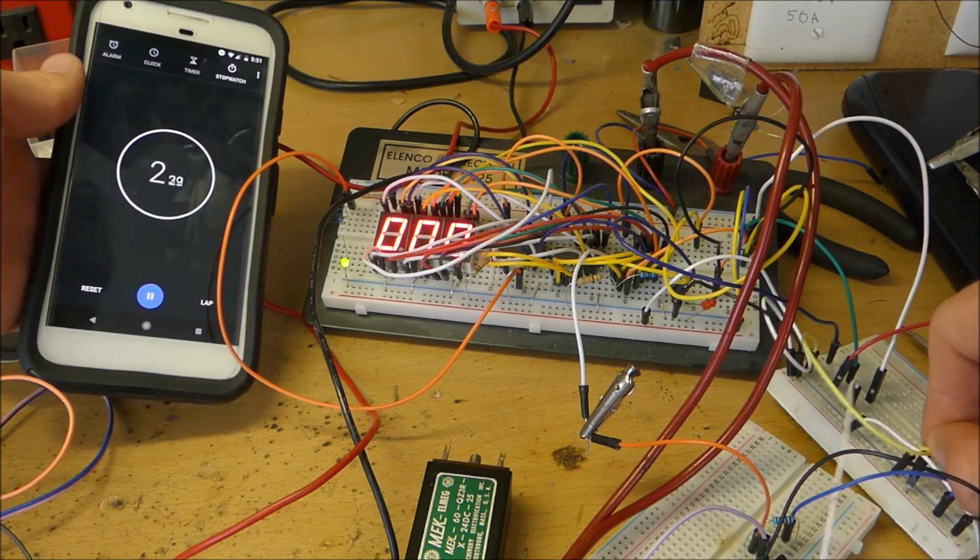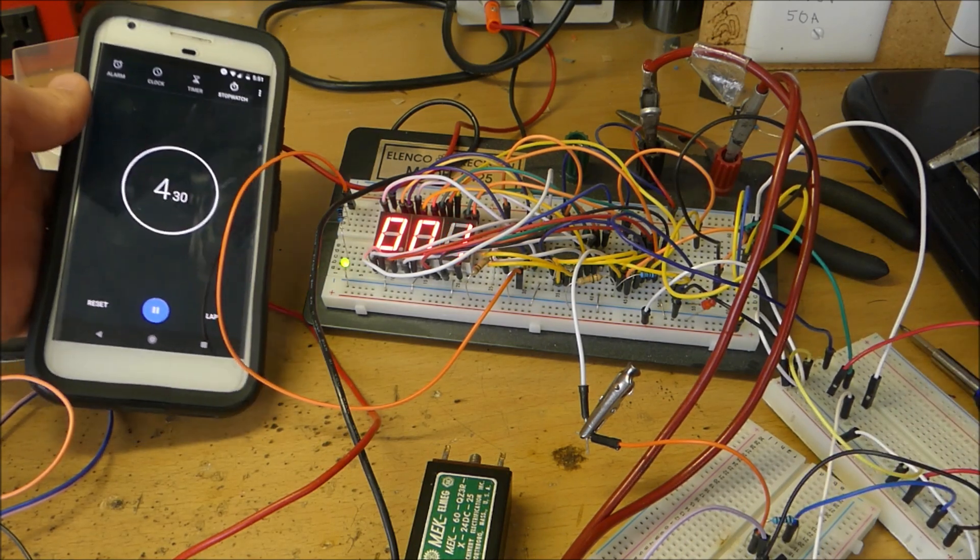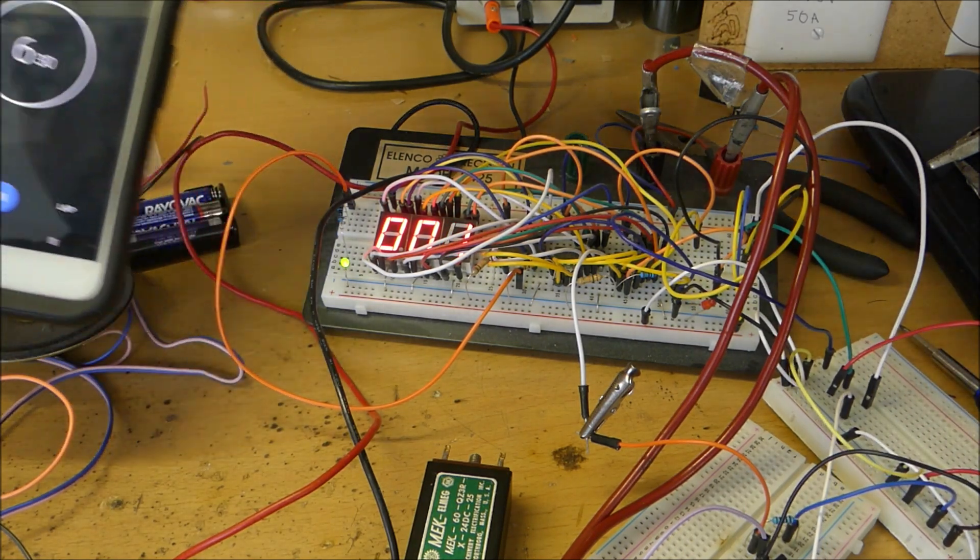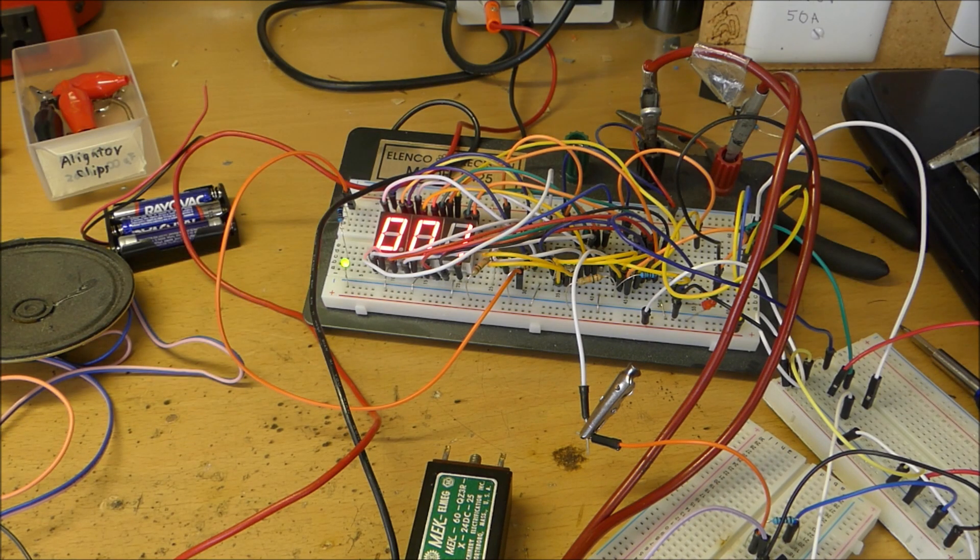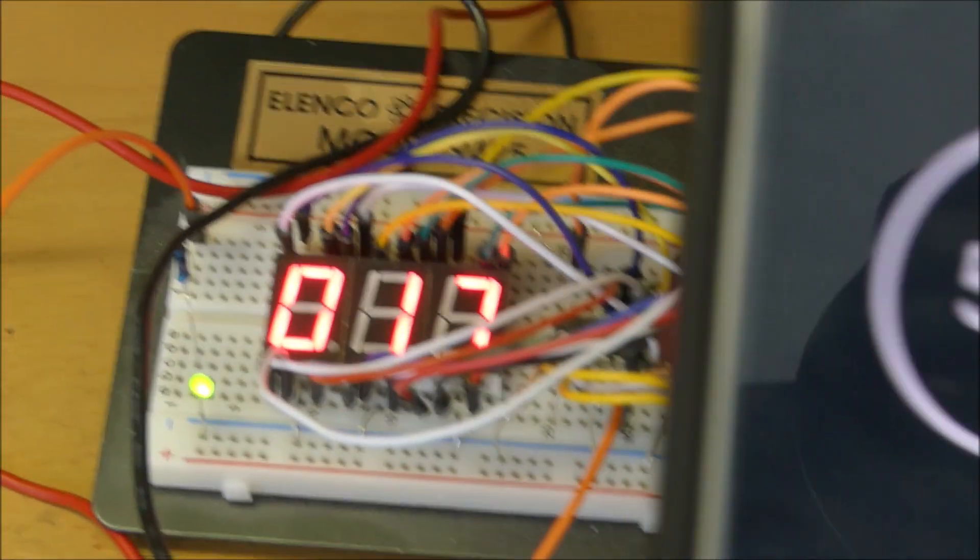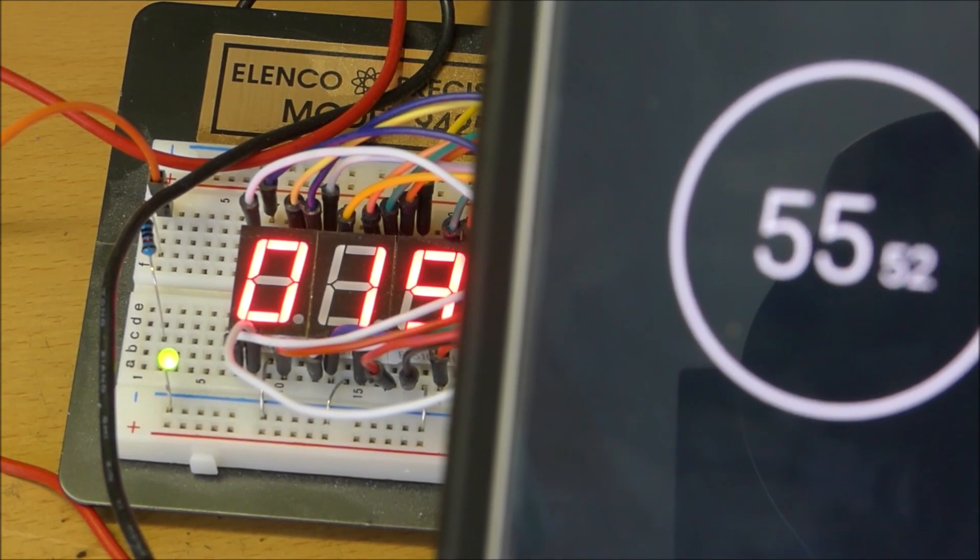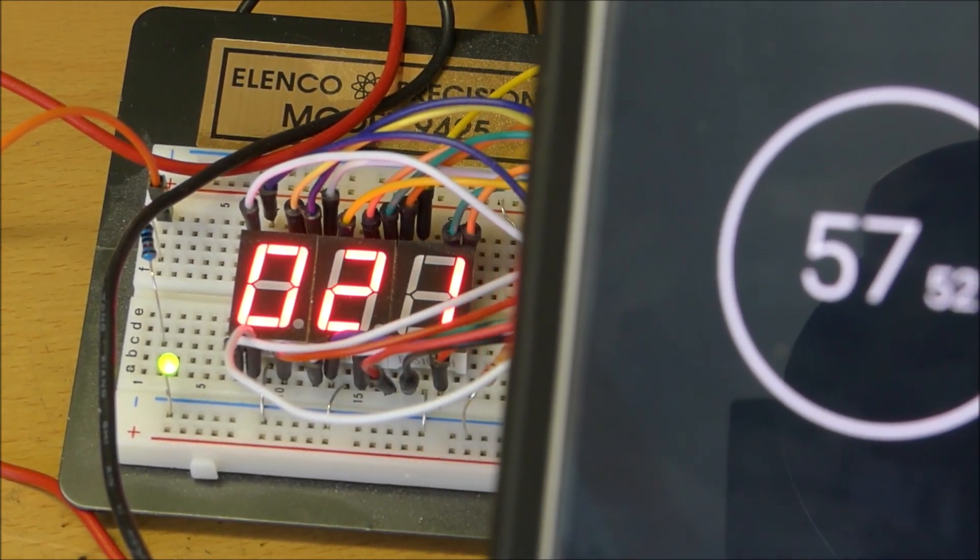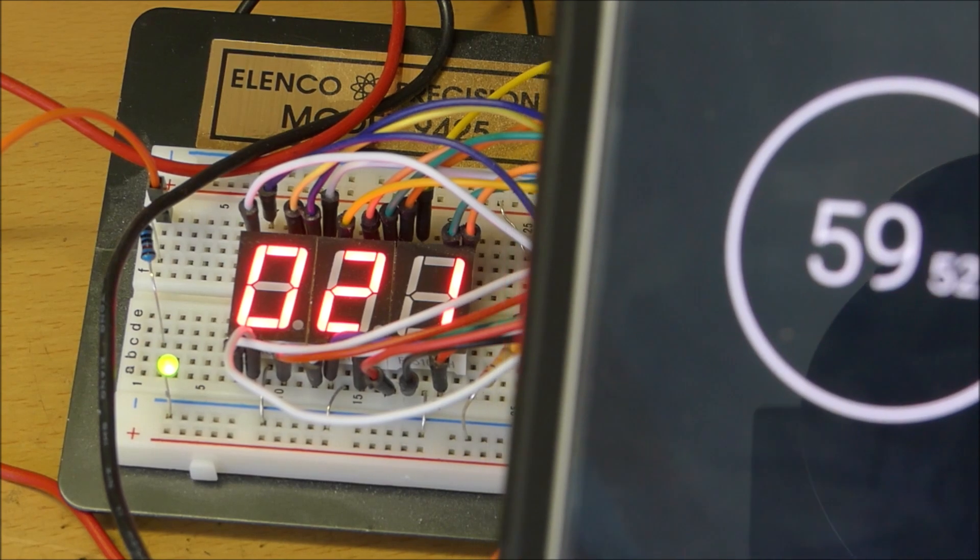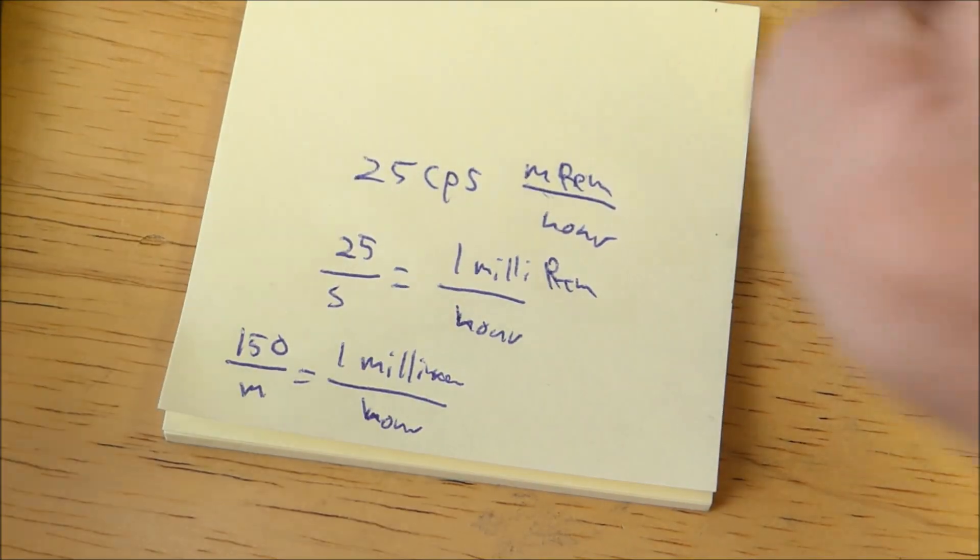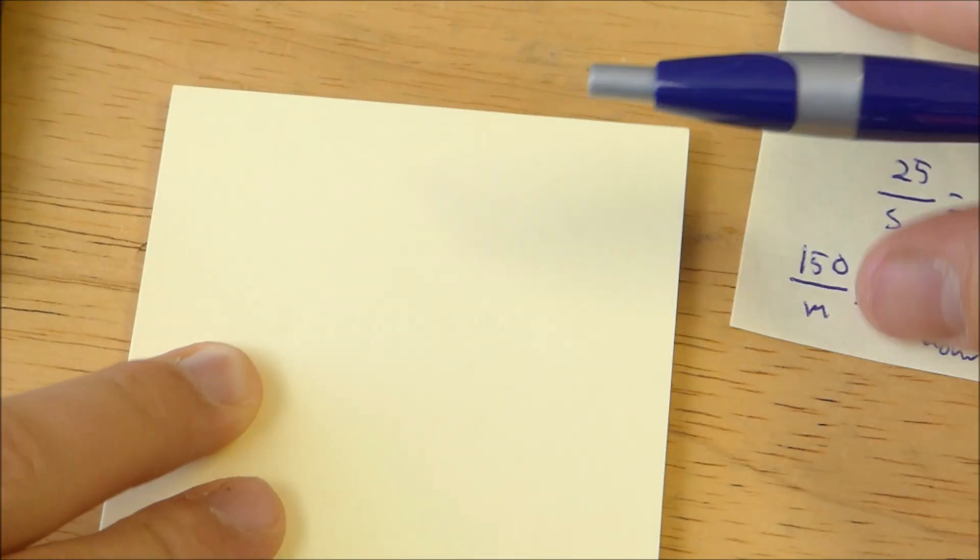Alright, so what I'm going to do is I'm going to start a timer running and let it do its thing and we'll see what happens. So right now we've got one count and that's all so far. 17 counts in 52 seconds. Alright, there's about 22 counts. So we have 22 counts per minute.